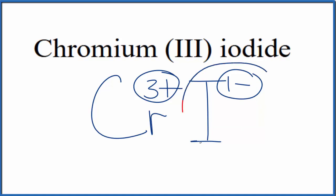So if I had 3 of these iodide ions here, if I had 3 of those, 3 times 1- is 3-, and that'll balance out the 3+, giving us a net charge of 0.